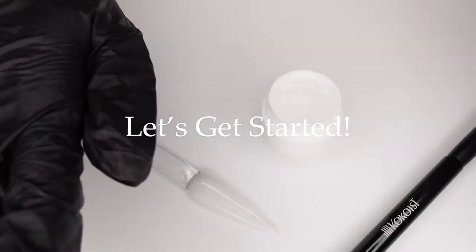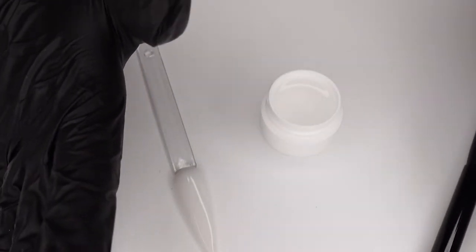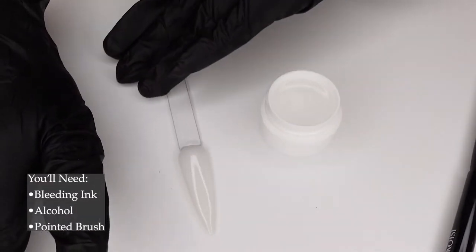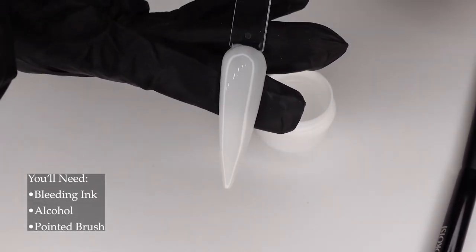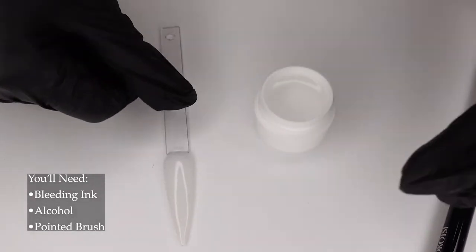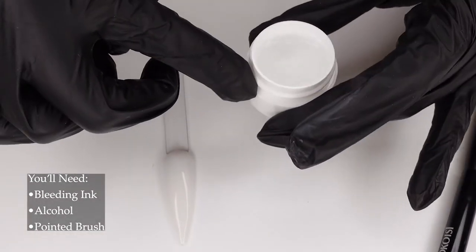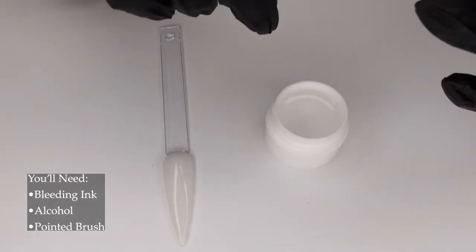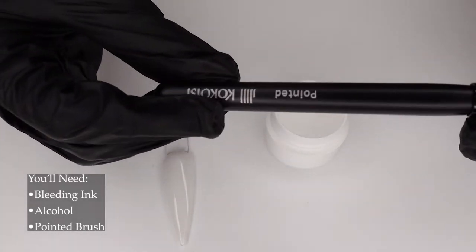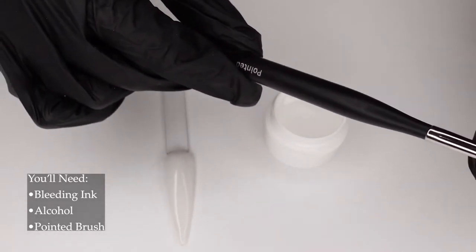So let's get started. I do need very little supply for this. I have my nail tip here ready all prepped, just a base coat on right now. Then I have my little jar of alcohol. Any alcohol is fine, and then I have my pointed brush, my Cocoist pointed brush.